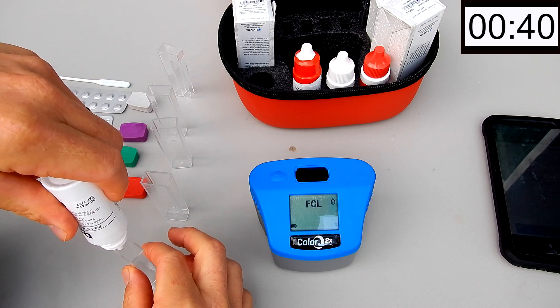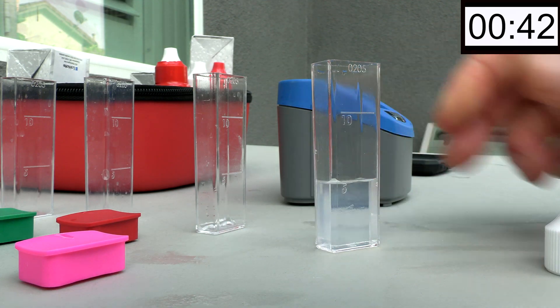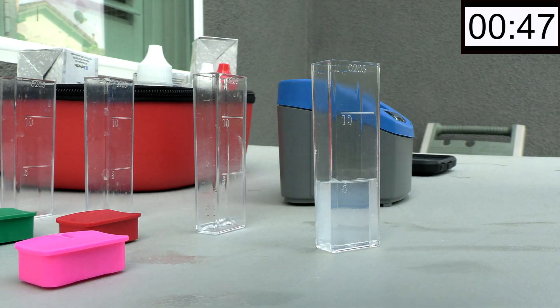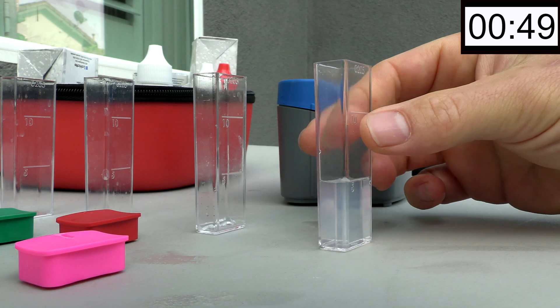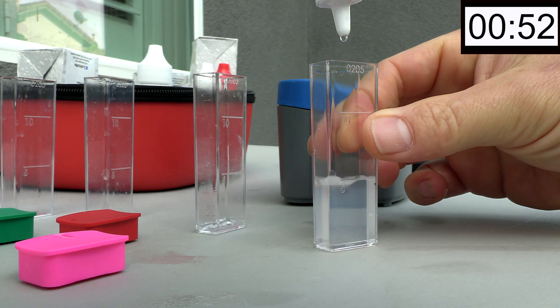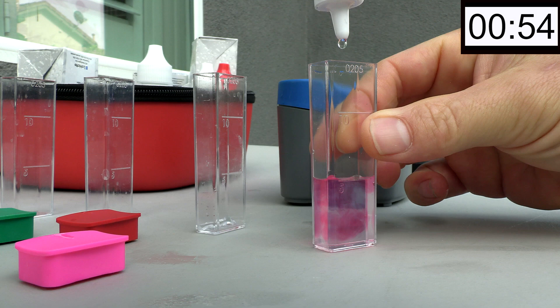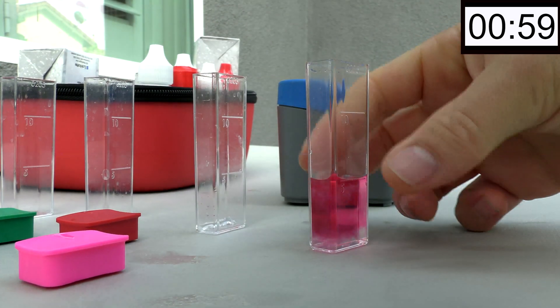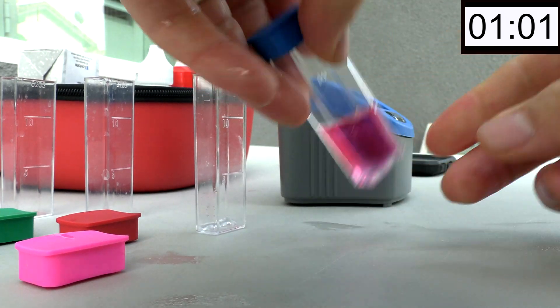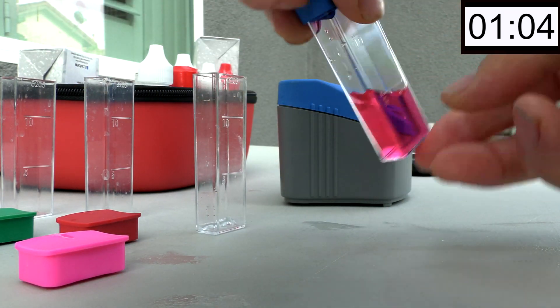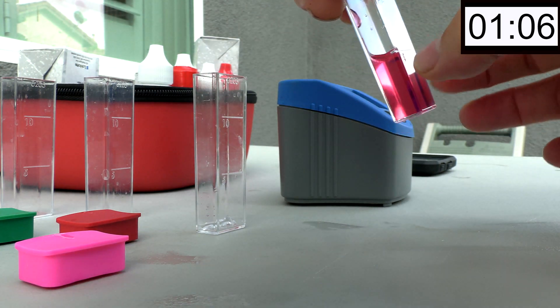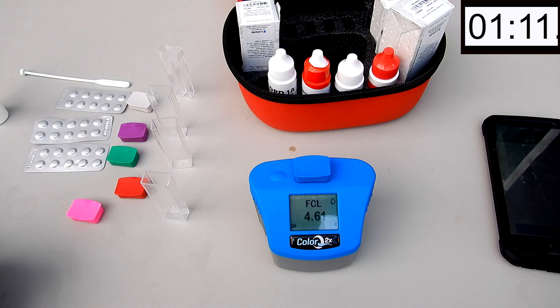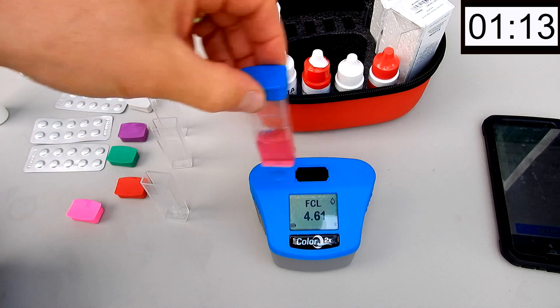I'll put 5 drops of the DPD-1, then 5 drops of the DPD-1B. Free Chlorine is 4.61.